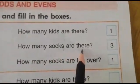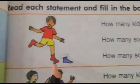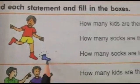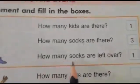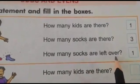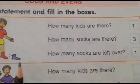Now who is he? He is a boy. How many kids are there? One. How many socks are there? Count the socks now: one, two, three. Three is written here. How many socks are left over? One. One is written here.